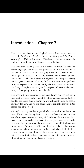Introduction, Chapter 3. This is the third book of this single-chapter edition series, based on the book Einstein's Relativity: The Special Theory and the General Theory, New Modern Translation 2024-2025. This short booklet includes Chapter 3 and only Chapter 3 from the book. This book was originally written in German by Albert Einstein, his native language, and it was first published in 1917 in Germany.